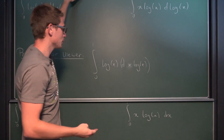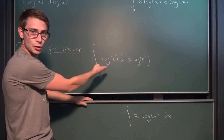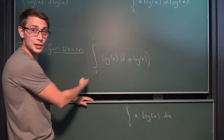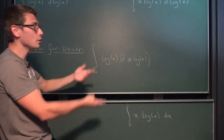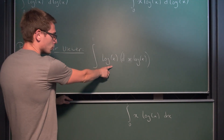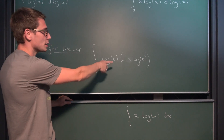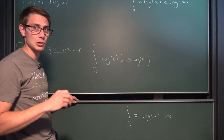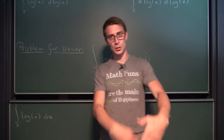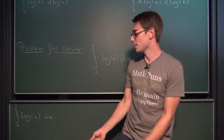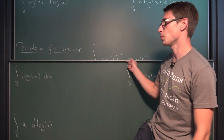And there's also a problem for the viewer — what happens if it's even possible to integrate the logarithm of x with respect to x times the logarithm of x? Check the last video for context. Try all of those out for yourself and post your solutions down in the comments. Now we are going to start off with the first problem.